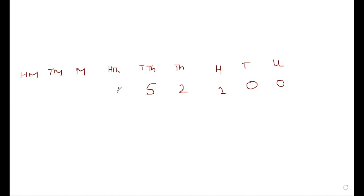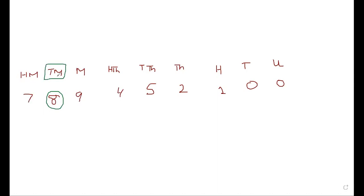Under hundred thousand we have four, under million we have nine, under ten million we have eight, and under hundred million is seven. They told us to find the place value of the circled digit. You can see on your books that eight is the circled one. The place of this eight is ten million, so the answer is eighty million.